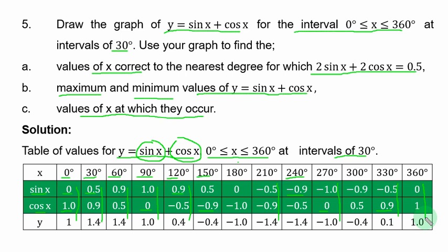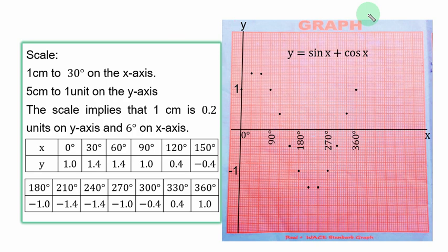Next thing, we add to plot the graph. We start by stating the given scale: 1 centimeter to 30 degrees on the S axis and 5 centimeters to 1 unit on the Y axis. This scale implies that 1 cm is 0.2 unit on Y axis, then 1 line is equal to 6 degrees on S axis.